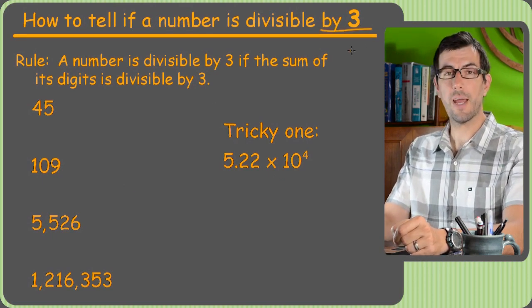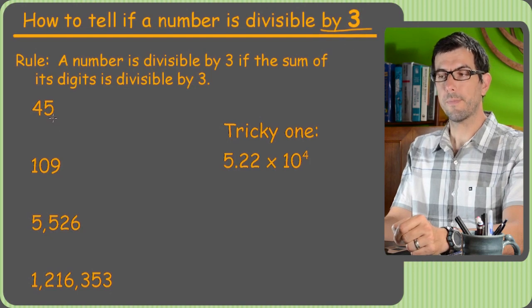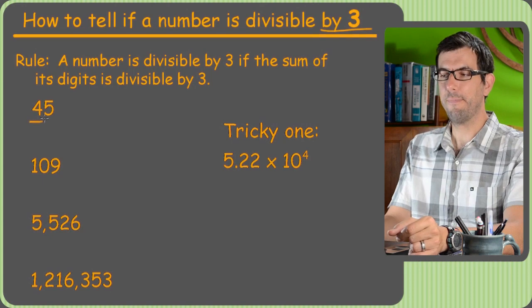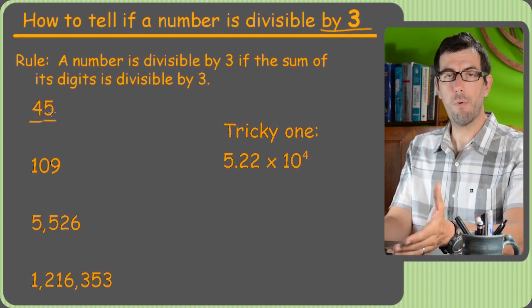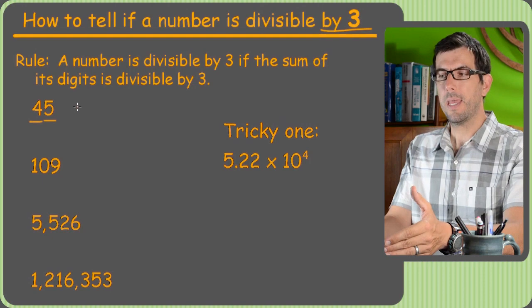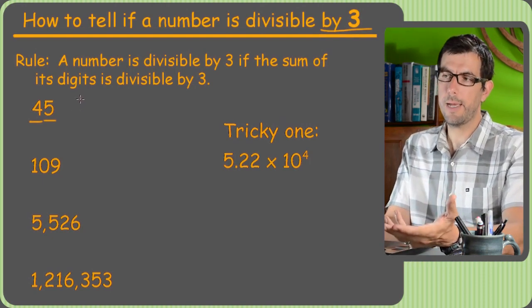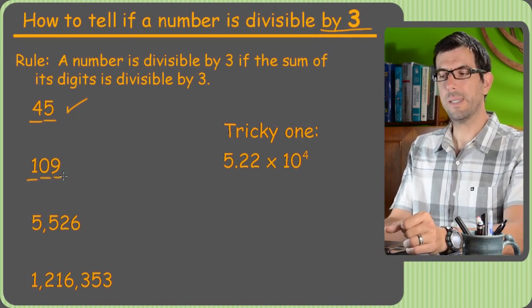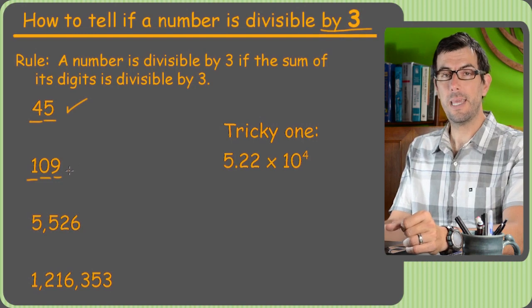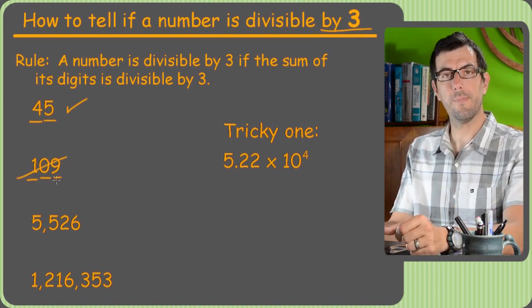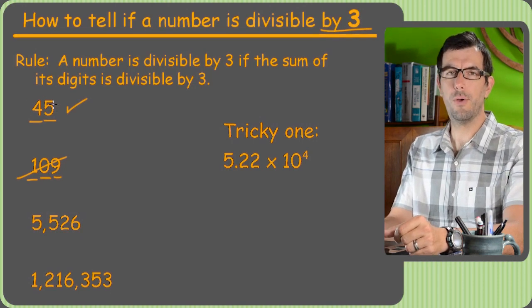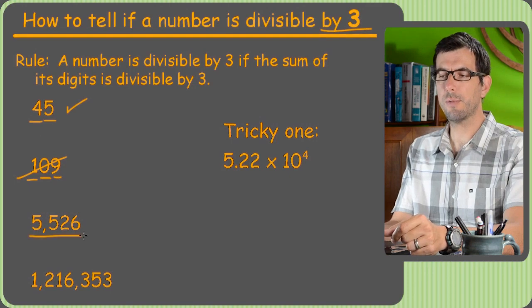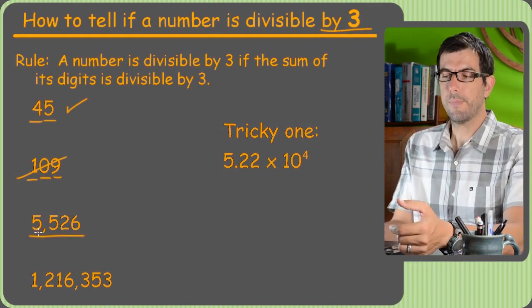All right, divisibility rules for 3. How do you figure out if something's divisible by 3? This is a really fun rule to use. And it's because I don't think anybody knows how it works, or at least I don't. It's just add up the digits. So in the case of 45, we just add 4 plus 5 is 9. And 9, of course, is divisible by 3. 3 times 3 is 9. Therefore, the whole number is divisible by 3. Again, I have no idea how this works. 1 plus 0 plus 9 is 10. 10 is not divisible by 3. Therefore, 109 is not either.